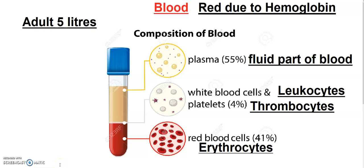Hello dear students, today's topic of discussion is blood, which is very important before reading the circulatory system. We all need to have a basic idea of blood — what it is and why blood is red in color. In the circulatory system, we will learn about blood, blood vessels, and a major organ called the human heart and how it works.